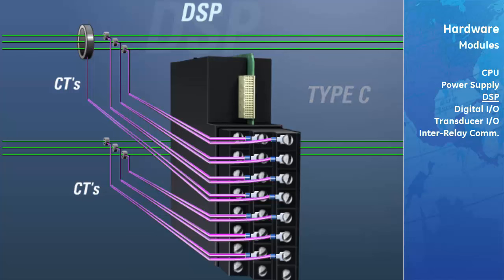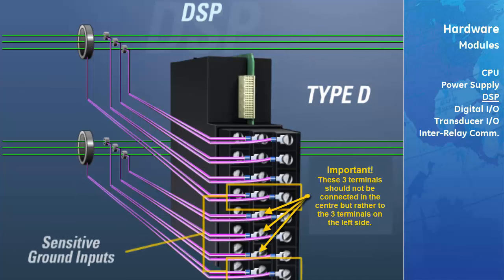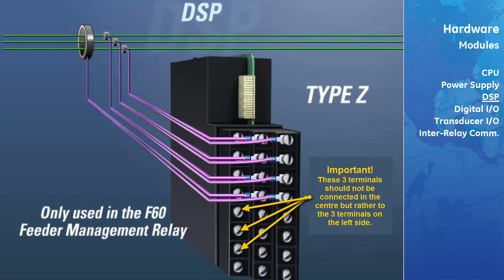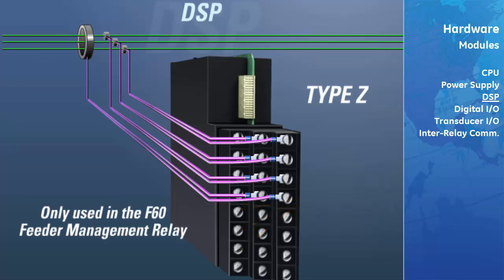The D type of DSP also contains CTs in both banks, however the ground CT on the fourth and eighth inputs are sensitive ground inputs. The Z type of DSP is only used in the F60 Feeder Management Relay for applications where you are trying to detect downed conductors, and only the first bank is used for CTs in this module.